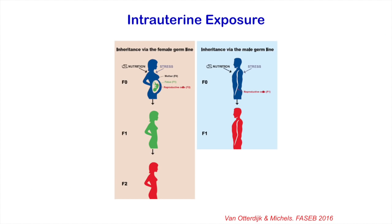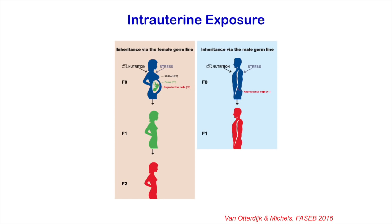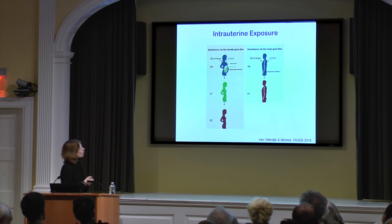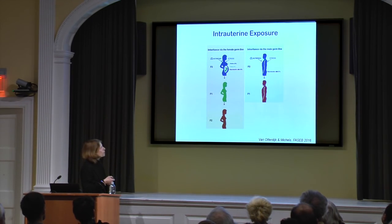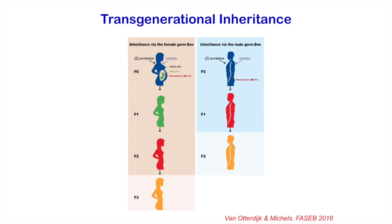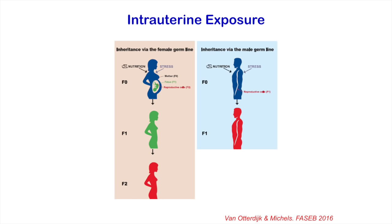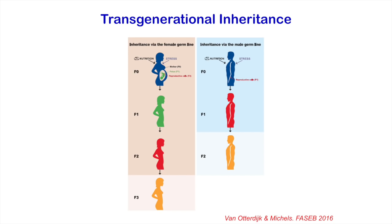This is only true for females, though. For the male germline, we really only need two generations because sperms are produced newly all the time. Intrauterine exposure along the female germline can reach three generations; along the male germline, two. To prove transgenerational inheritance, you would need four generations along the female germline and three along the male germline. I'm not saying this could not be transgenerational inheritance — I'm just saying to prove that it is, you need this. This is very hard to get, and in humans would certainly exceed the lifetime of one researcher.